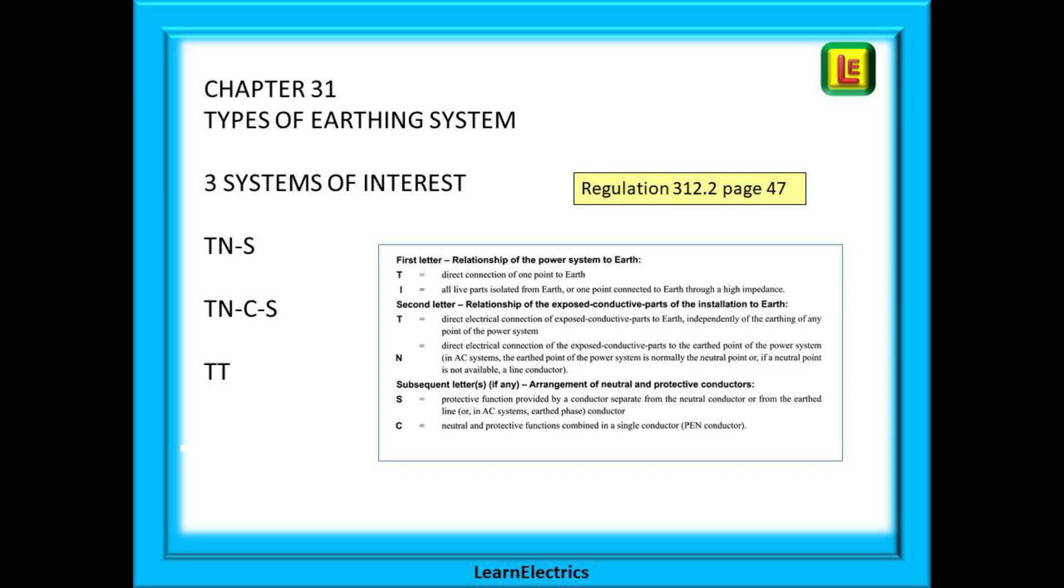The table on page 47 describes how code letters are used. The code letters that matter to us mean T for earth. The Latin name for earth is terra, a T. N is for neutral. C for combined where the earth and neutral are combined together and use the same conductor. And S is for separated where the earth and neutral are in separate conductors.